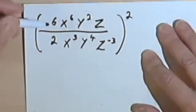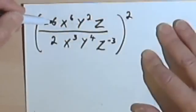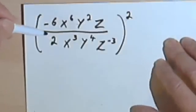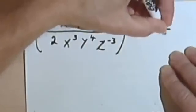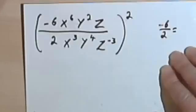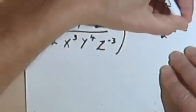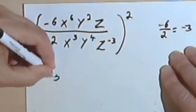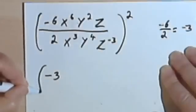Working inside the parentheses first, let's look at the coefficients. I've got negative 6 over 2. Thinking of that as just a fraction, negative 6 over 2 reduces to negative 3. So the negative 6 over 2 part just becomes a negative 3.